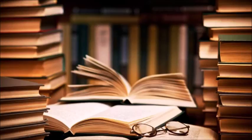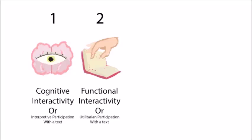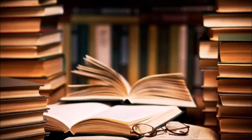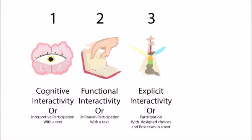Second, functional interactivity, or utilitarian participation with a text. You feel the book — how big it is, how thick it is, how good-looking it is, how it smells. This refers to the tactile feeling of the book and the functional and structural interaction with the device the text is held in. For a video game, this would be how the game disc's cover and its accompanying contents, and possibly the console, feels to your senses.